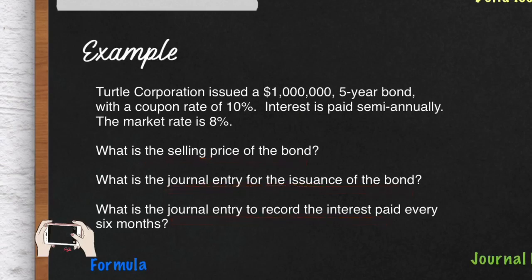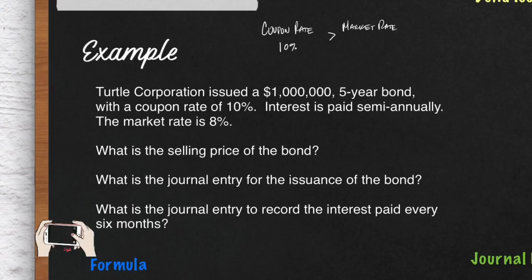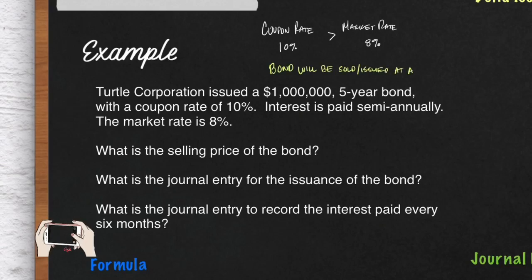Before we get to the calculations, it's important to compare the coupon rate with the market rate. Our coupon rate is 10% and the market rate — what everyone else is offering — is 8%. Notice that we offer a greater rate of return to the bondholder. In this case, our bond will be issued at a premium, meaning the selling price will be greater than one million dollars.